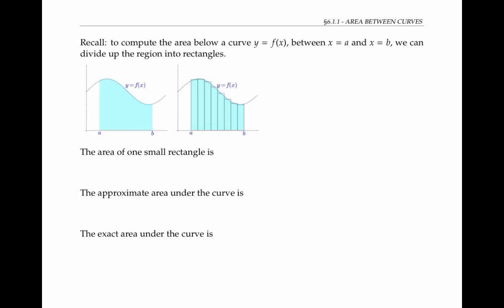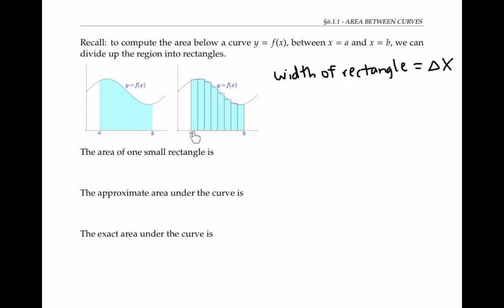You represented the width of one of these rectangles using the symbol delta x. Here, delta x means a small distance along the x-axis, or a small change in x-values. You picked out an x-value, called a sample point, from each of these little sub-intervals along the x-axis.